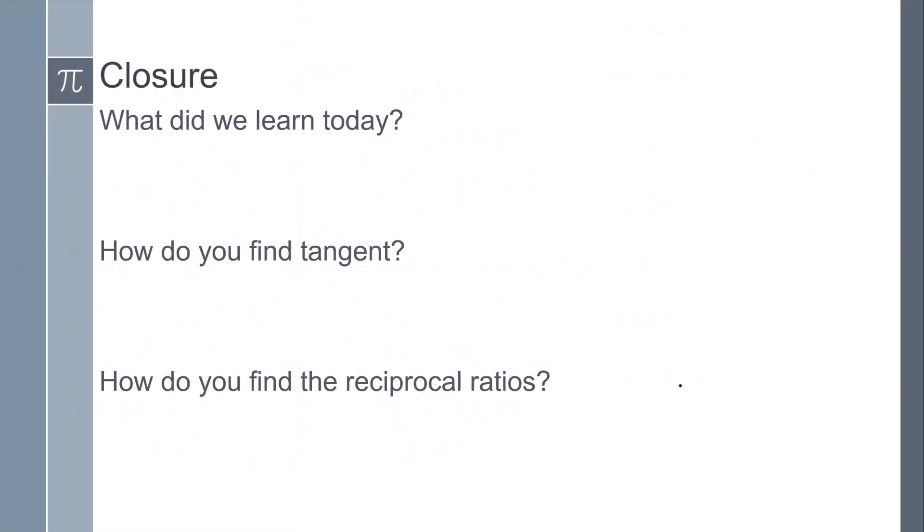So what did we learn today? We talked about how to find tangent and the reciprocal ratios on the unit circle. How do you find tangent? Tangent is sine over cosine, or if you want to think about it as y over x, you can do y over x. And how do you find the reciprocal ratios? You need to find the sine, cosine, or tangent ratios, and then you flip it, which is going to be the reciprocal.